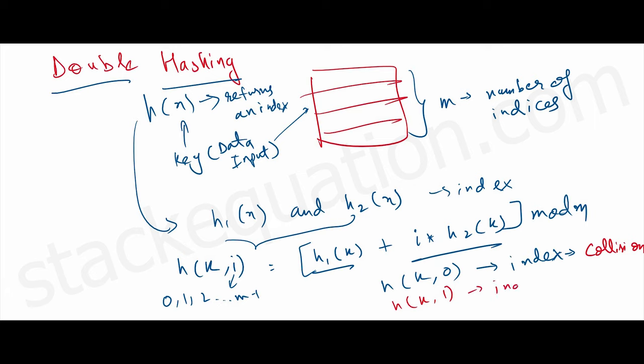will return an index, and then we'll check if this index already has data. If yes, then this also leads to collision, so we'll move on to h(k,2) and so on.